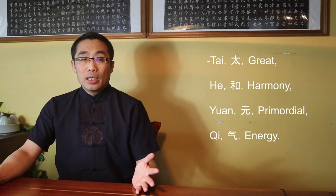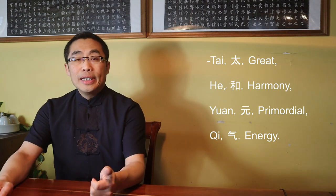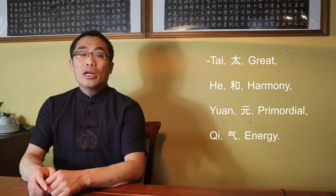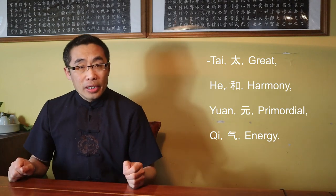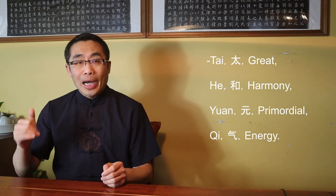Tai He Yuan Qi originated in Chinese philosophy, with subsequent adoption in Chinese aesthetics, and eventually also in Tai Chi practice. I'd like to explain Tai He Yuan Qi in much more detail compared to my prior explanation since it is not only very beautiful but also very meaningful in terms of explaining Tai Chi practice. The term Tai He Yuan Qi consists of four characters: Tai means Great, He means Harmony, Yuan means Primordial, Qi means Energy. Very often, Tai and He work together to express Great Harmony, and Yuan and Qi work together to express Primordial Energy.